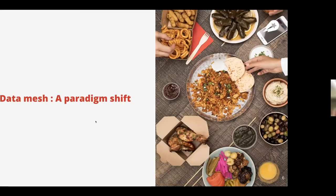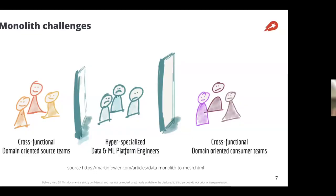Being a distributed company gave us a unique situation where we had to rethink our data infrastructure. Usually data teams are structured with cross-functional domain-oriented source teams operating closely together — front end, back end, product manager, devops. But on the other sides you have hyper-specialized data and platform engineers operating within a different silo from the cross-functional source teams where data is actually produced.